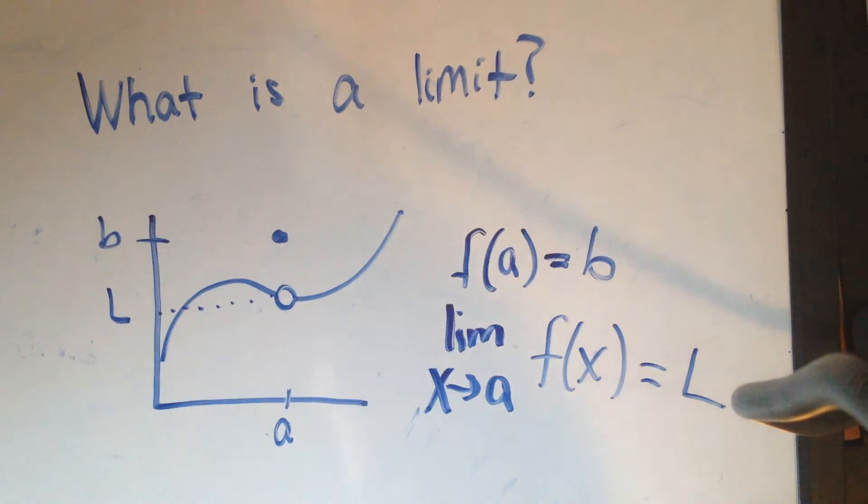And the calculus textbook says, the idea of the limit: We say that the number L is the limit of f of x as x approaches A, provided that we can make the number f of x as close to L as we please, merely by choosing x sufficiently near, though not equal to, the number A.